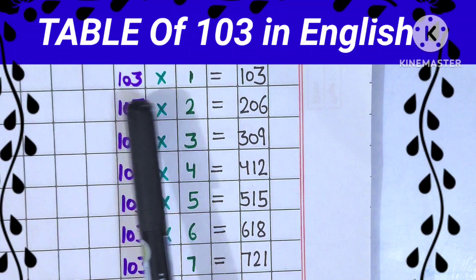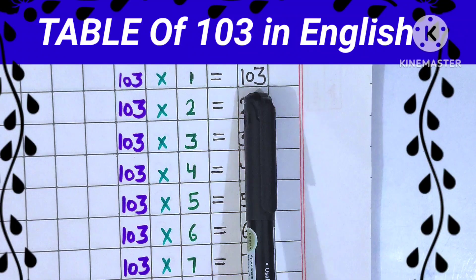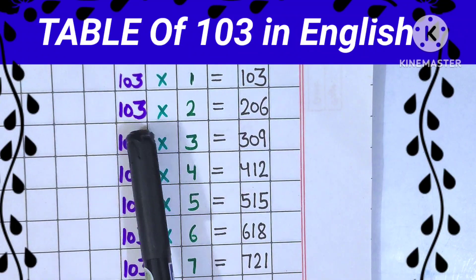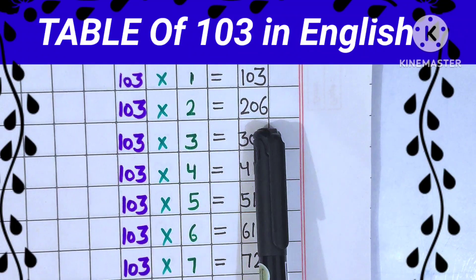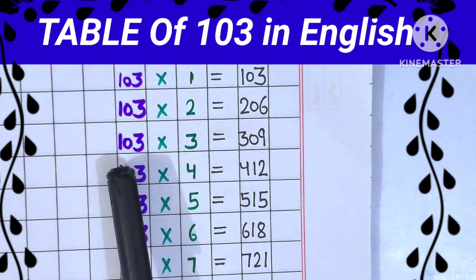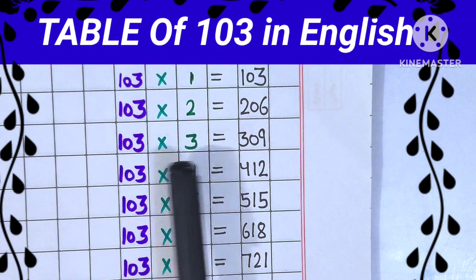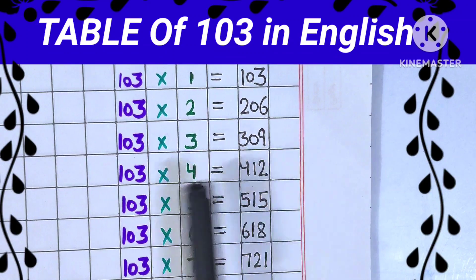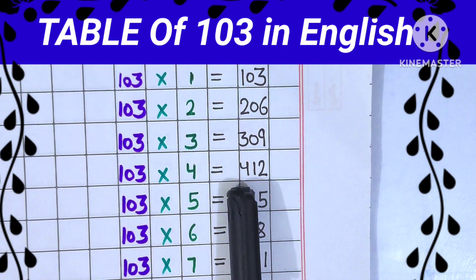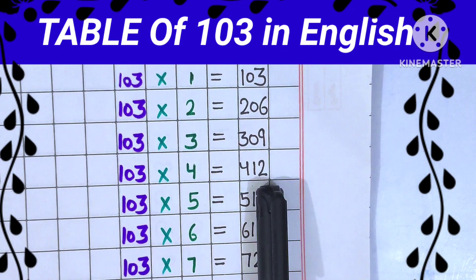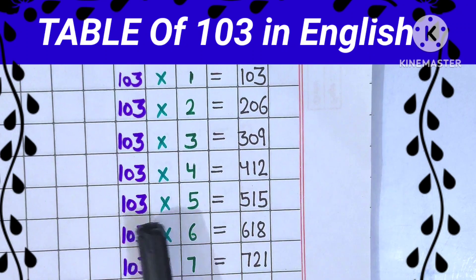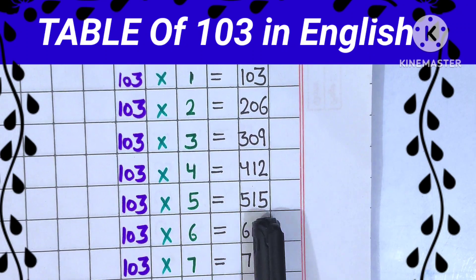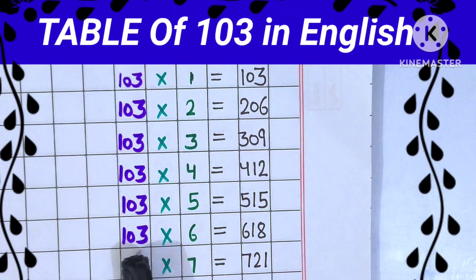103 ones are 103. 103 twos are 206. 103 threes are 309. 103 fours are 412. 103 fives are 515.